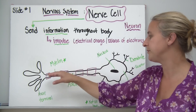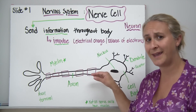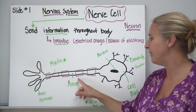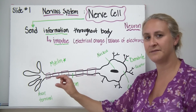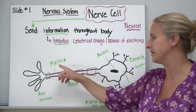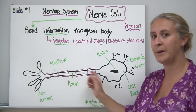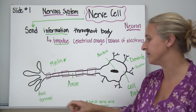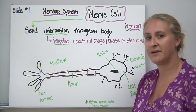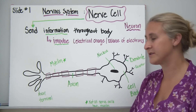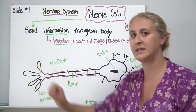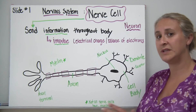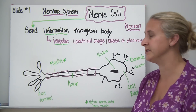The signal then travels through the axon, which is the center portion of the nerve cell. Some nerve cells have special fatty coverings called myelin, which helps the signal travel faster. At the other end are axon terminals, which release signals to transmit to the next neuron. Pause to finish labeling if needed.